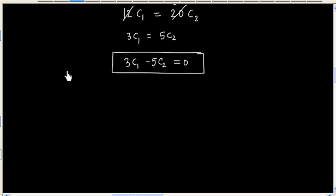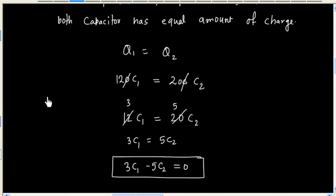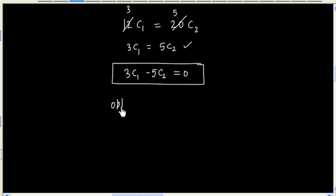Option connecting two capacitors each will have zero potential difference. So this is option number 4, 3C1 equals 5C2. So option 4 is the correct answer.